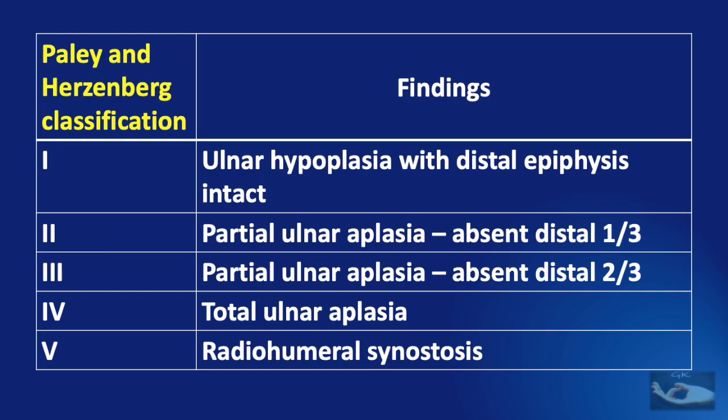The Paley and Herzenberg classification is almost similar to the Bayne classification. Here there are five types. In Type 1 there is ulnar hypoplasia with distal epiphyses intact. In Type 2 there is partial ulnar aplasia with absence of the distal third. In Type 3 there is partial ulnar aplasia with absent distal two thirds. Type 4 refers to total ulnar aplasia and Type 5 refers to radiohumeral synostosis.